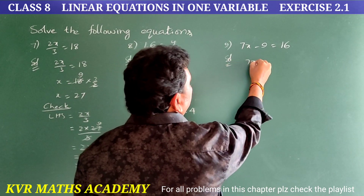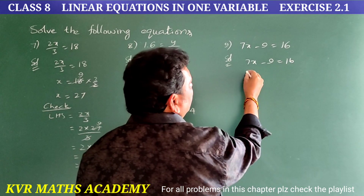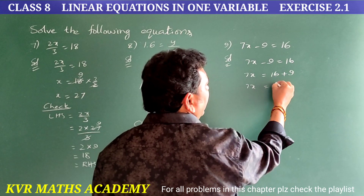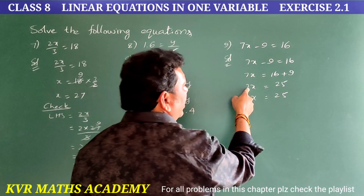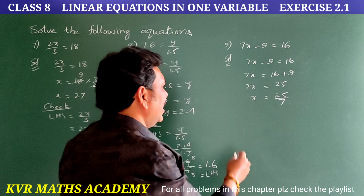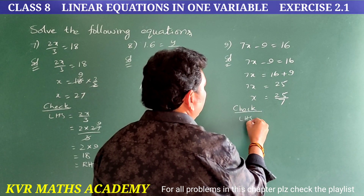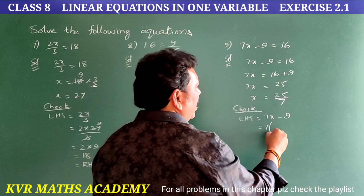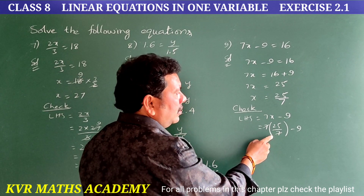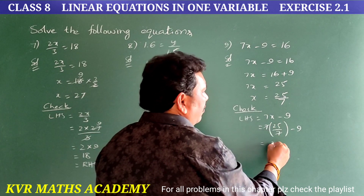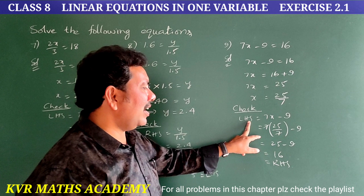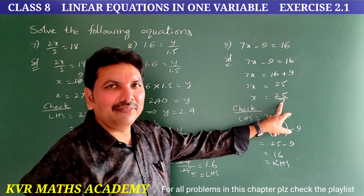Ninth solution. Given: 7x minus 9 equals 16. Transposing gives 7x equals 16 plus 9 equals 25, so x equals 25/7. Check: LHS equals 7 into 25/7 minus 9 equals 25 minus 9 equals 16, which equals RHS. Therefore x equals 25/7.